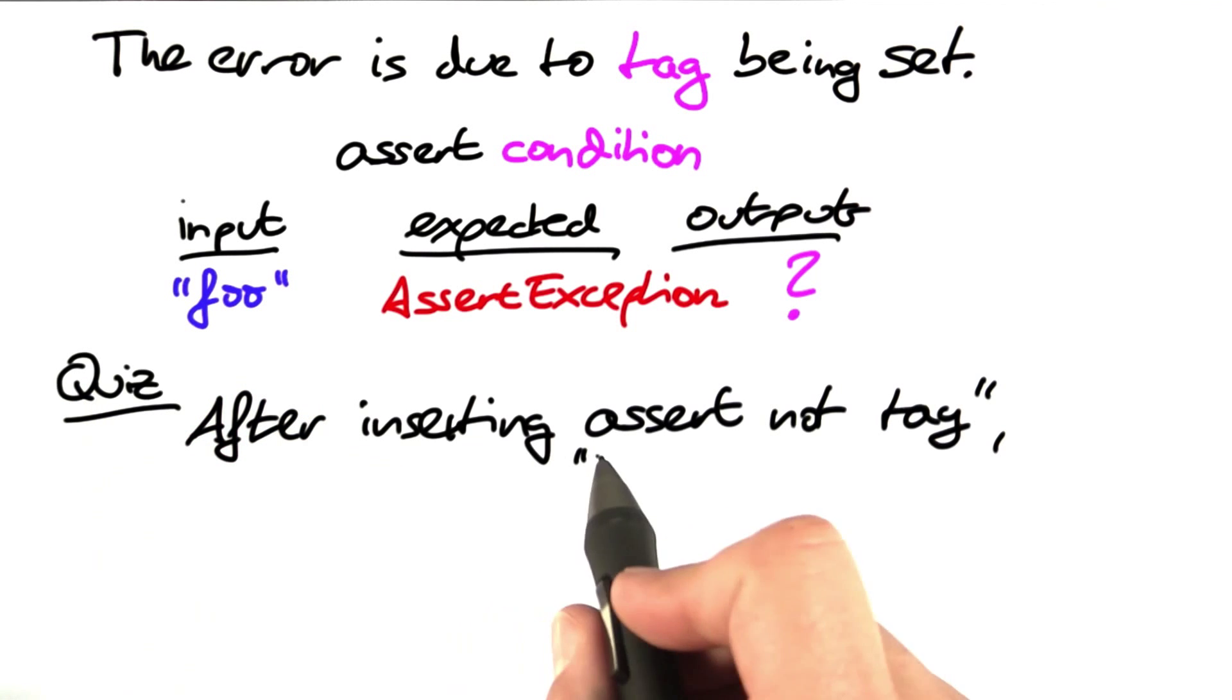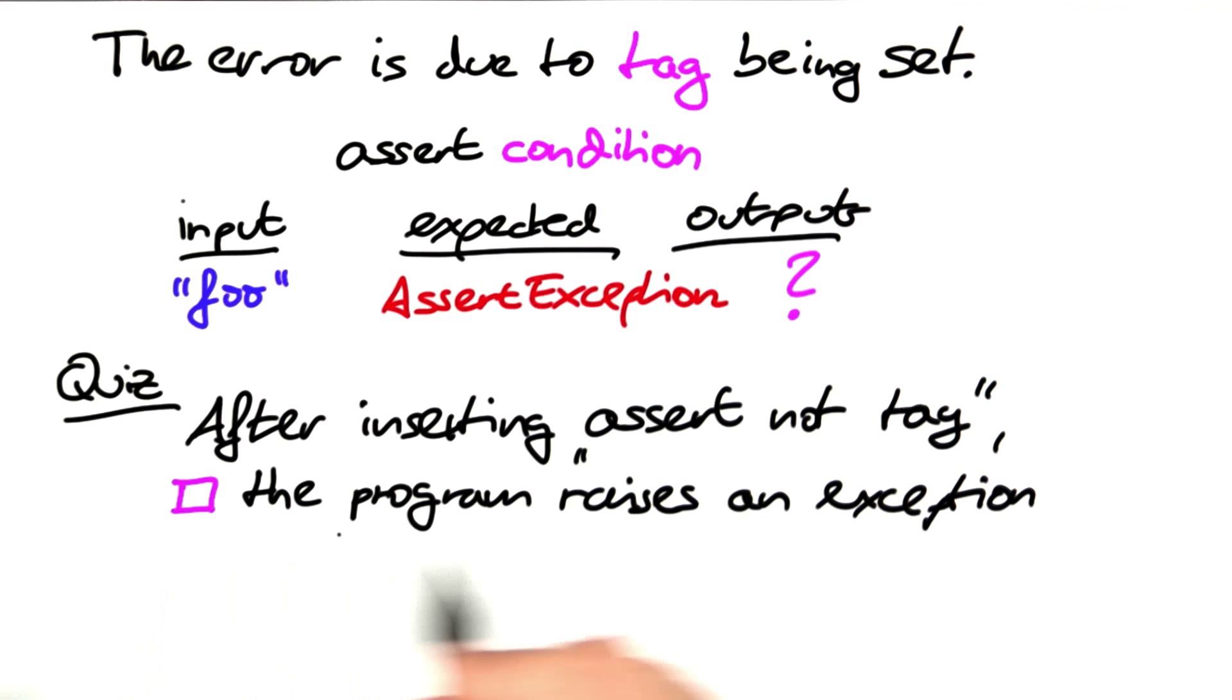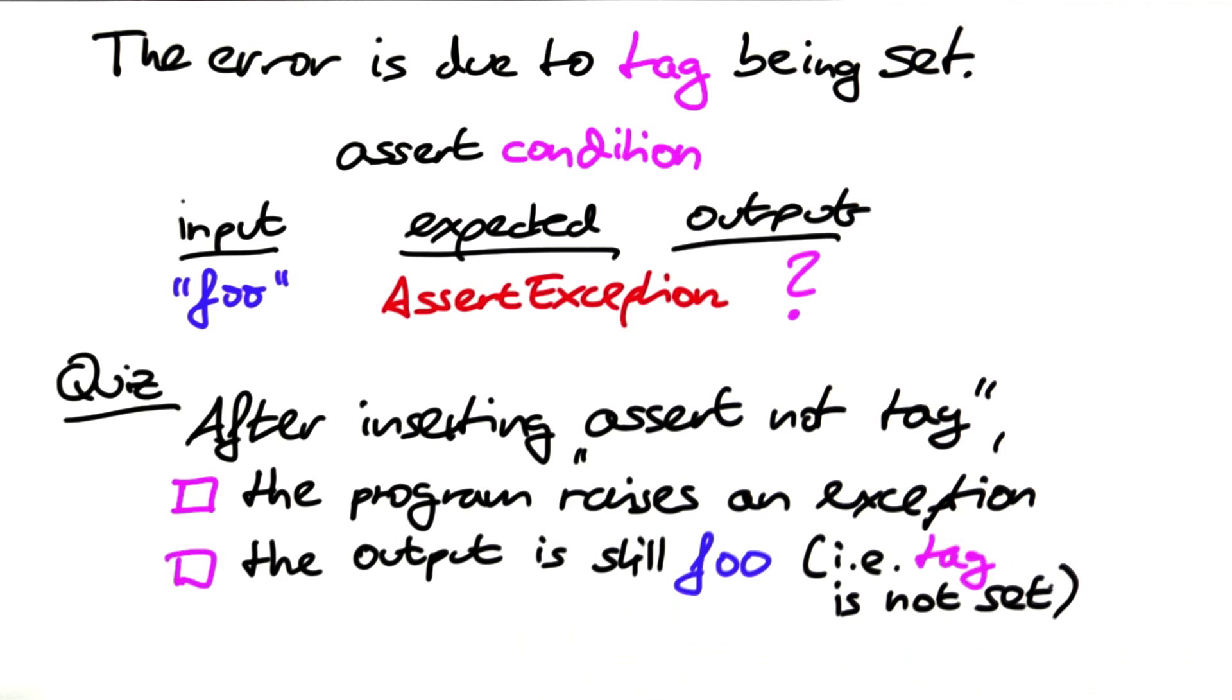Let's make this a quiz. Now that we changed the program to include assert not tag, what's going to happen? Does the program raise an exception? Or is it the case that the output is still foo as before, the assertion is not violated, and tag is not set during the entire loop?